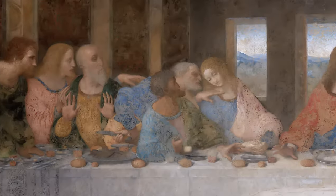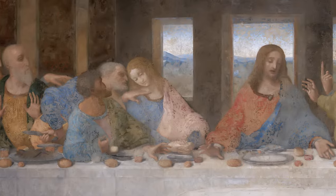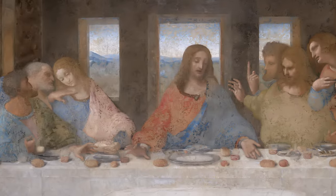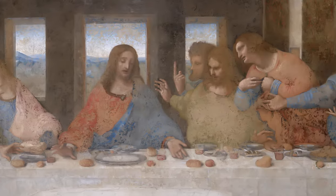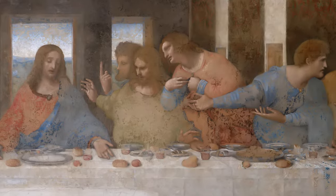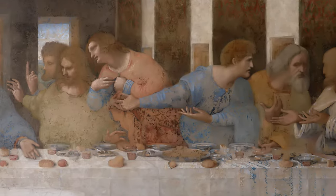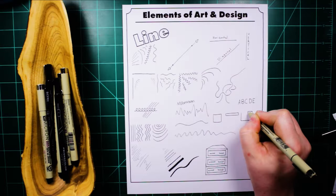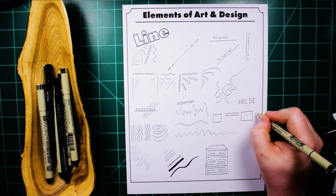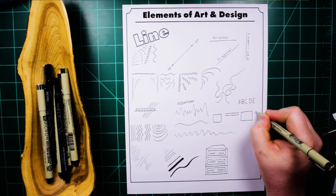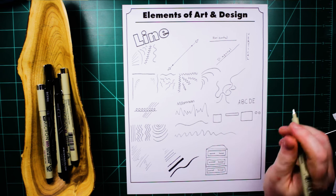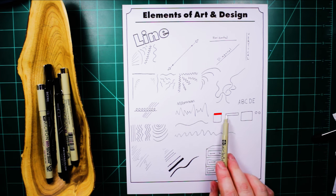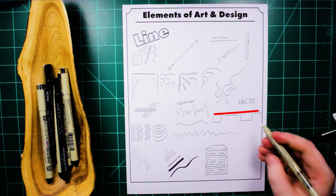However, many artists choose to subdue these lines or eliminate them altogether, instead using the other elements such as color and value to create the barriers at the edges of objects. Even so, anywhere that two objects point towards each other or have any kind of barrier between them, viewers' eyes manage to imply the lines that aren't really there.